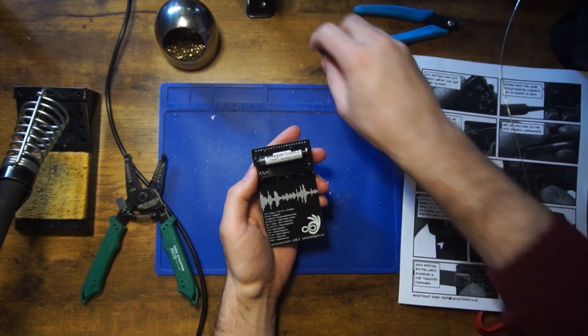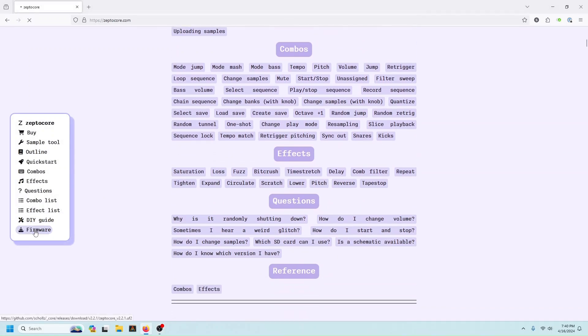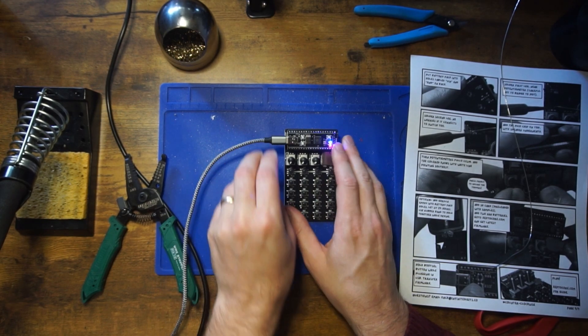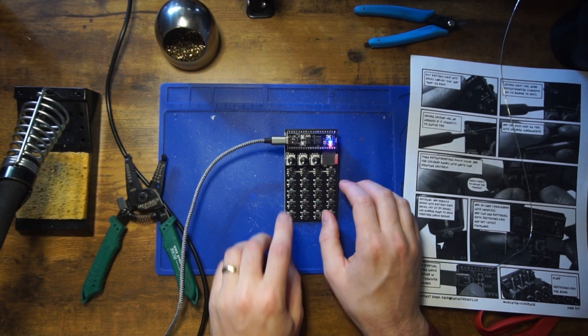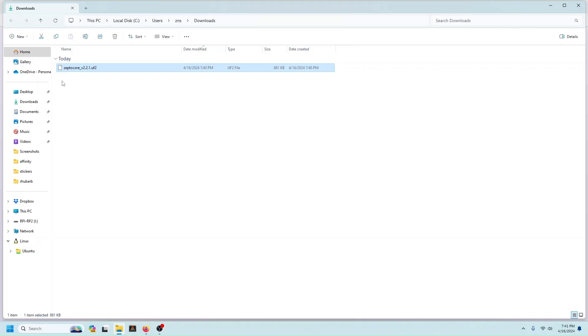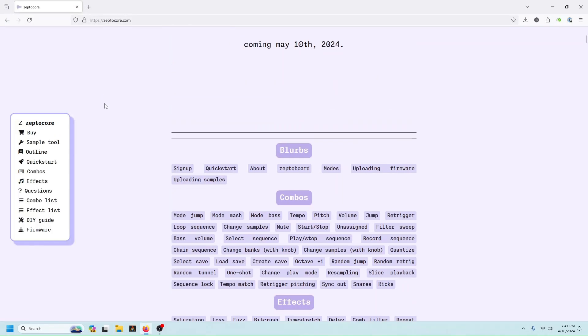And now we're going to have to upload the firmware. So go to the website, zeptacore.com, and scroll down. You'll see a link to the firmware. Go ahead and click that, and it will download the latest firmware. Now insert a USB-C cable, hold the boot button, and then press the reset button while the boot button is being held. A new drive will pop up in your computer. Copy the UF2 file that you downloaded and paste it into the new drive. The new drive will then disappear, and you'll see that the zeptacore boots up.